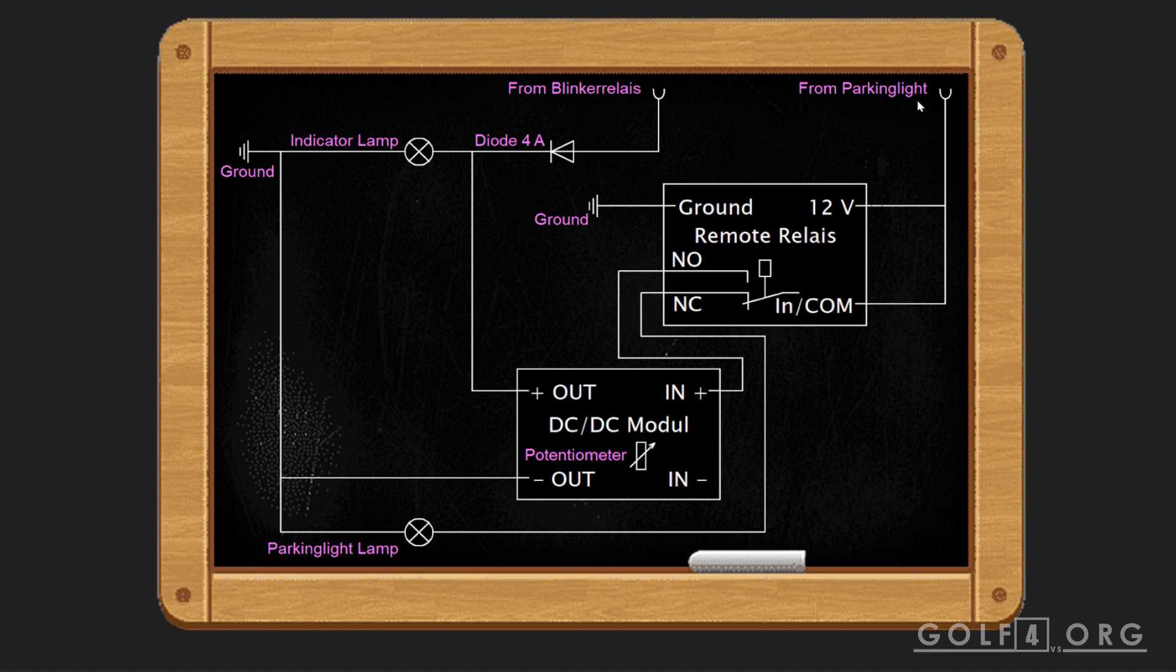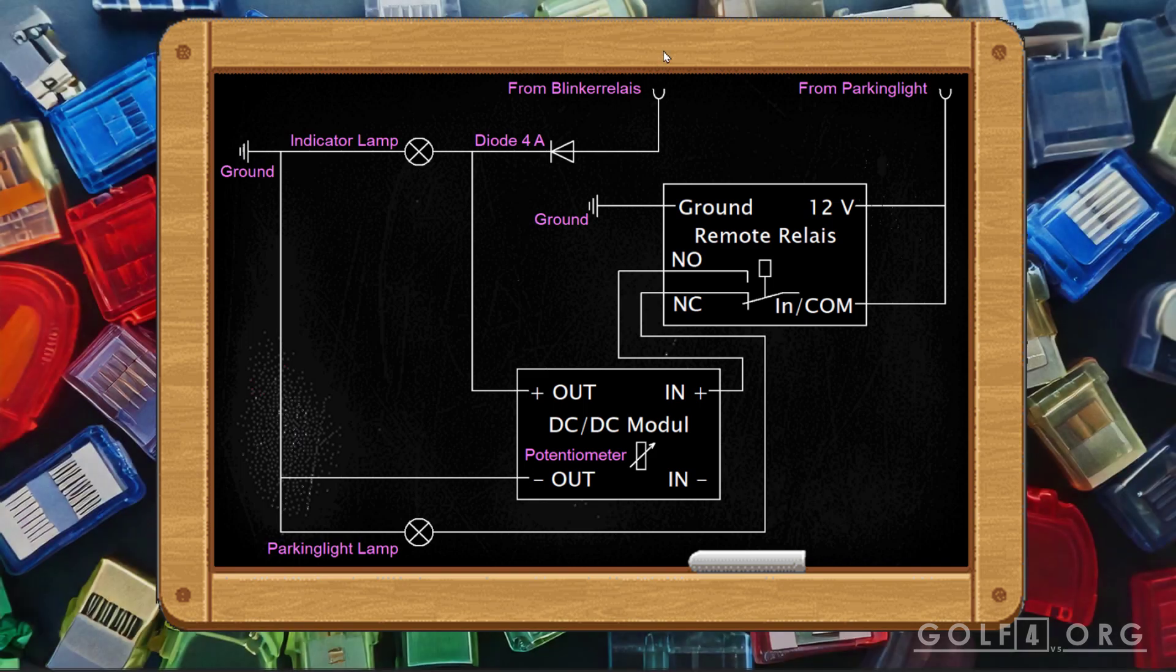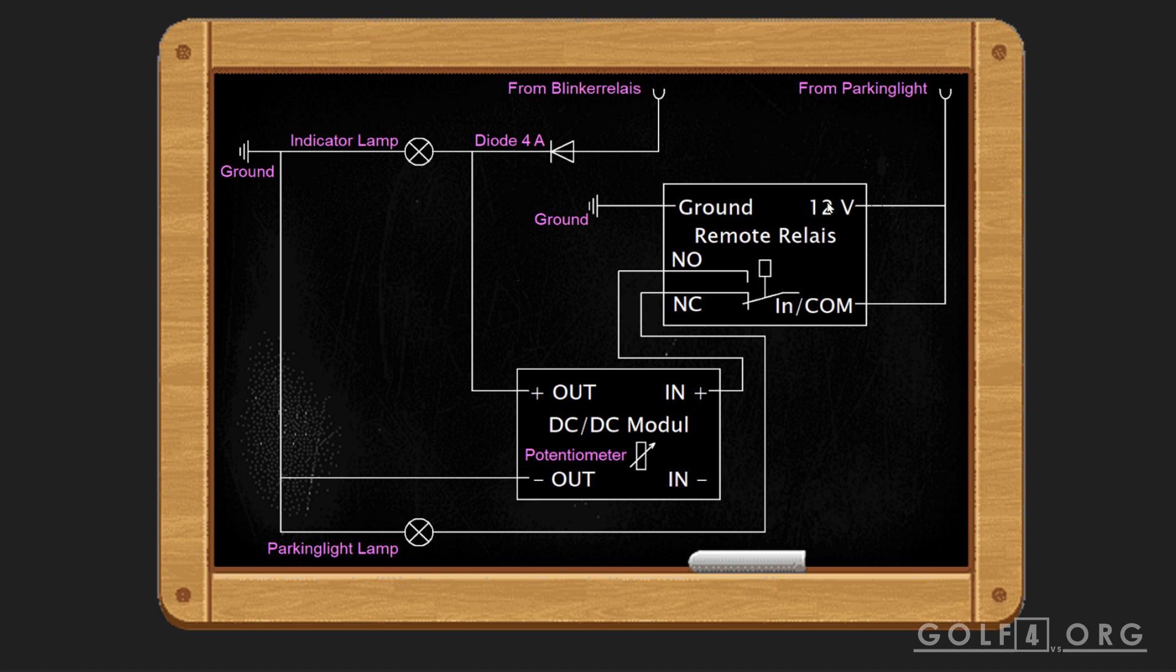Our parking light has a fuse, so we don't need an extra fuse here. If you want, you can put one here, but it's not necessary. But you know, fuses are cheap, so put fuses everywhere. We cut the line from the parking light and connect it to our 12-volt input on the remote relay and to our input or COM from the relay itself.